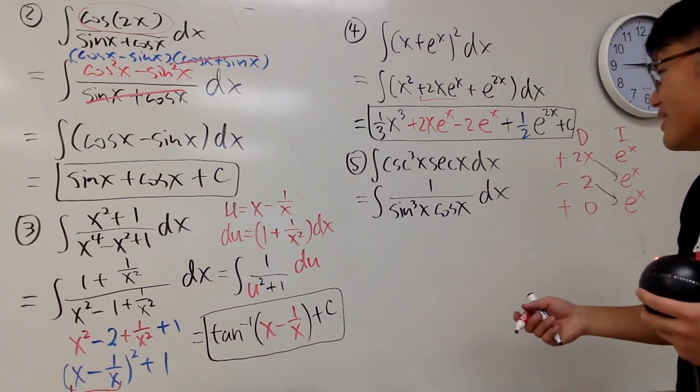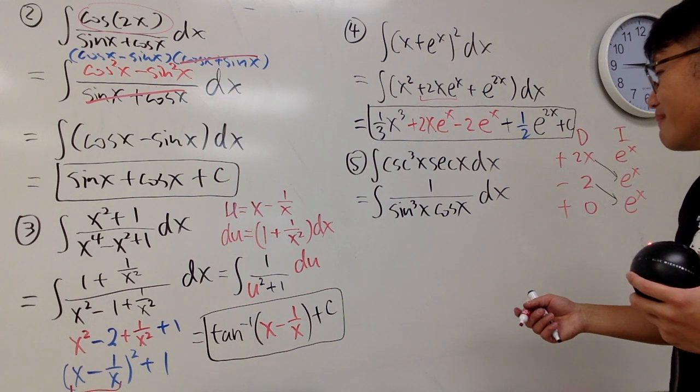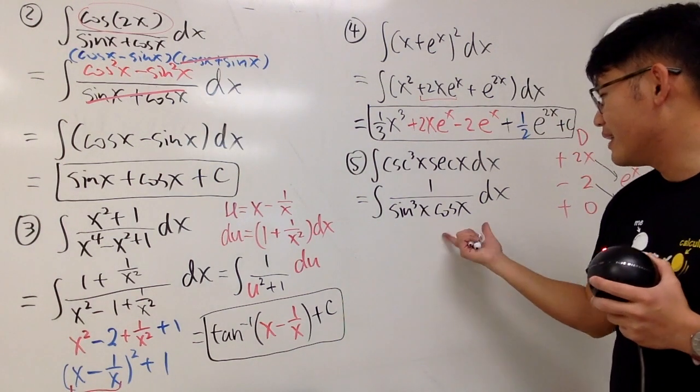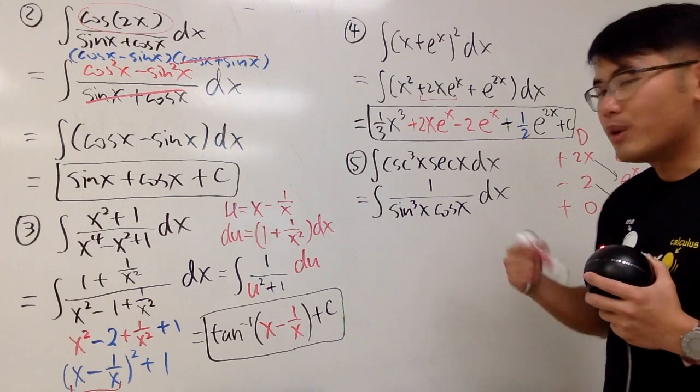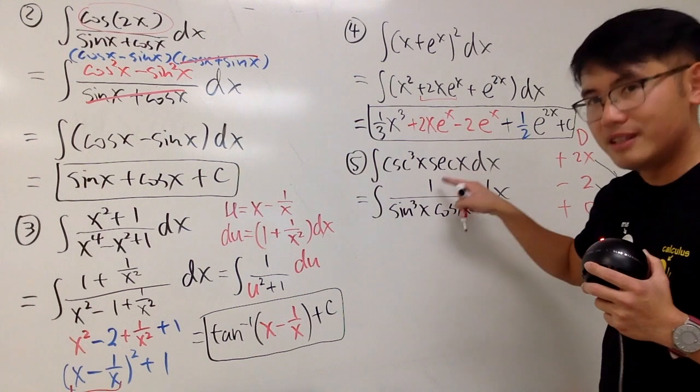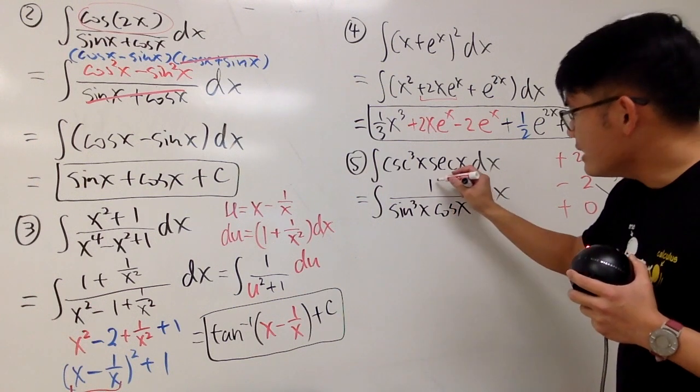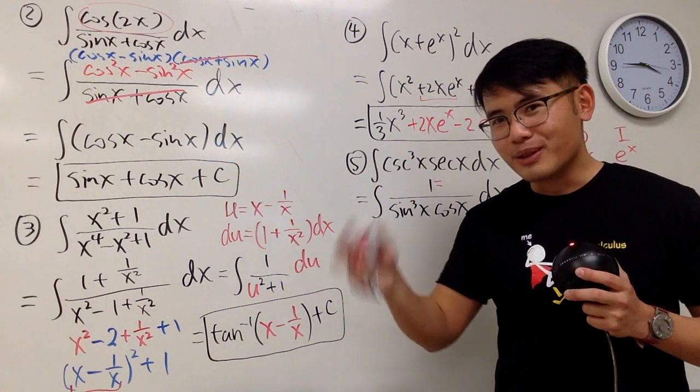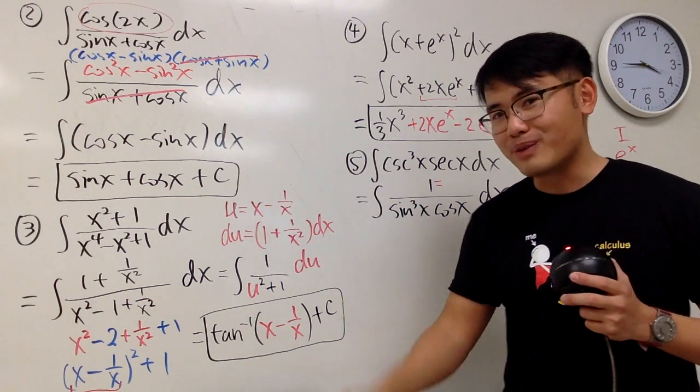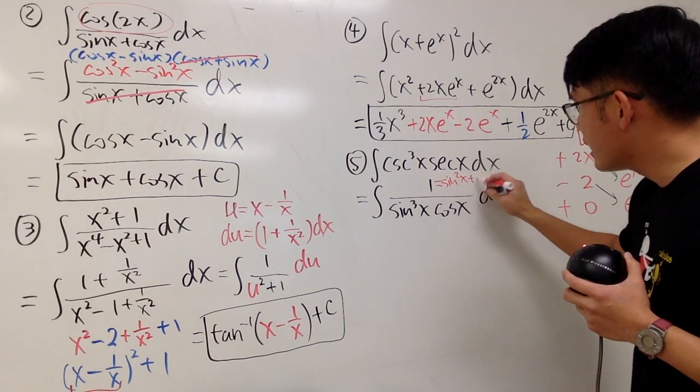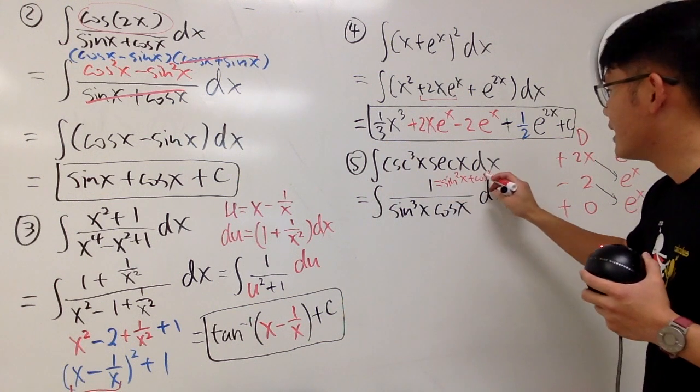So this is good, but I don't think this is enough to work with, because if I want to do u sub, then I'm stuck. I want to have more things to work with, and the deal is that I will be utilizing this 1. As we all know, we like to look at sine squared plus cosine squared being equal to 1, but today we'll do it backwards. We can look at 1 as sine squared x plus cosine squared x.